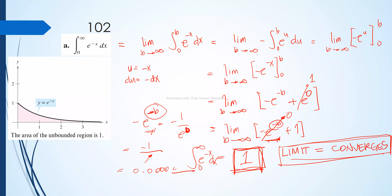In the earlier example there was no limit because the answer was positive infinity — no fixed value. But for this example there is a particular fixed solution, therefore a limit exists and the improper integral converges. The graph shows the function -e^(-x) and the area under the curve equals 1.